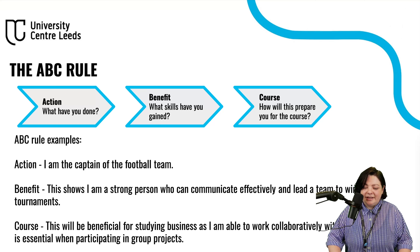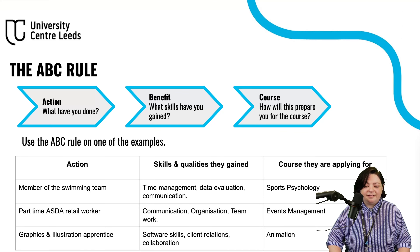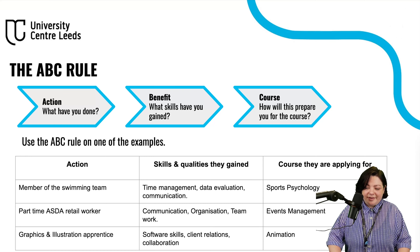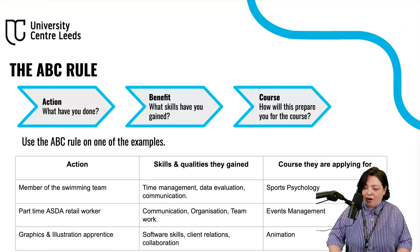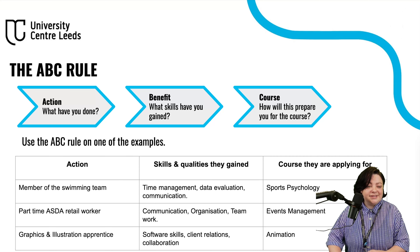Let me break it down further. The Action is what have you done? Benefit is what skills have you gained from that? And Course is how has this prepared you for your chosen course? For example, if someone is a member of the swimming team, the benefits might include skills in time management, data evaluation — such as looking at competition times — and communication. On a sports psychology course, they'd be confident collaborating with others, completing group projects in a timely manner, and have a good understanding of data analysis. You can really see how your actions lead to why you'd be right for the course.